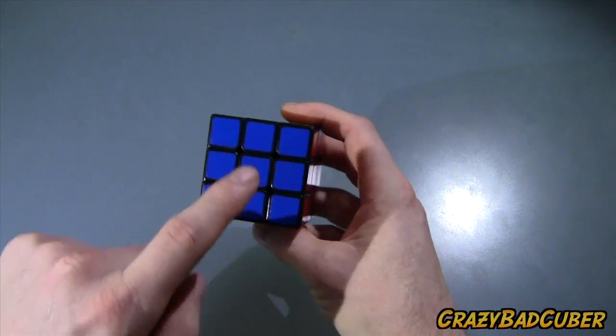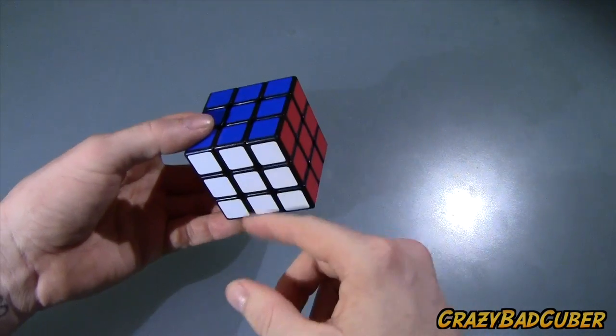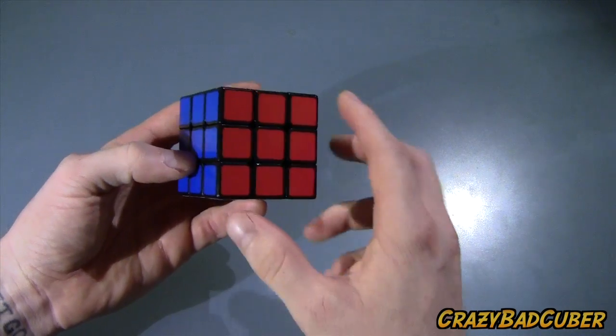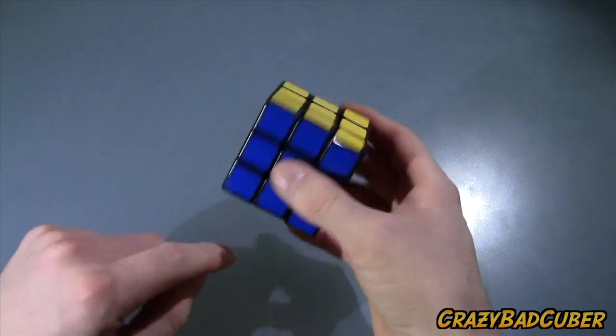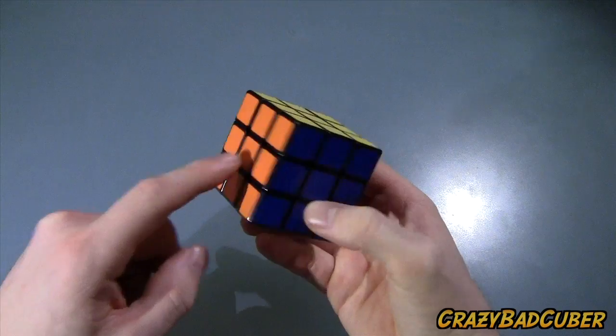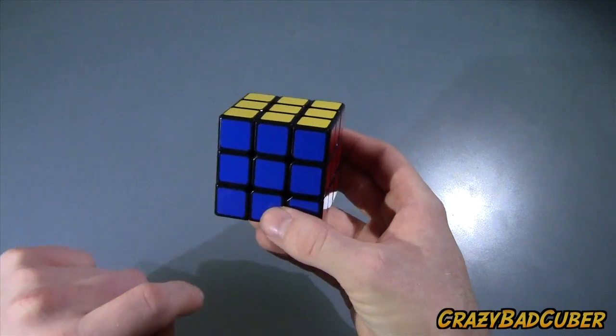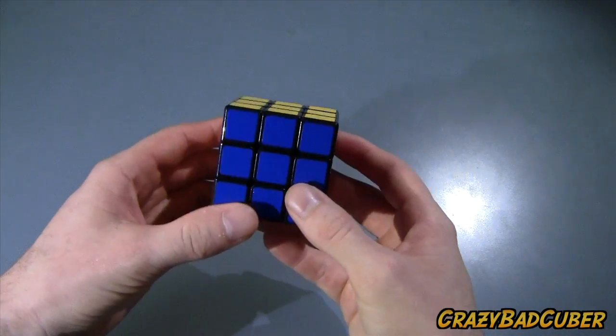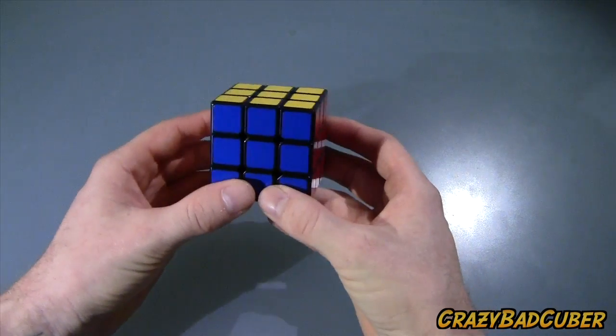You're going to notice that there are six sides to a cube. For this demonstration, I'm going to have the blue in front, the white on the bottom, and that means the red is on the right. Also you're going to notice that opposite white is yellow, opposite orange is red, and opposite blue is green. For this demonstration, I'm going to keep white on the bottom and blue in front of me.